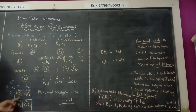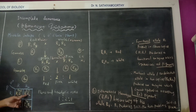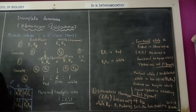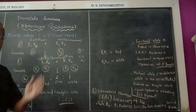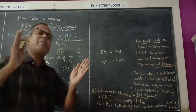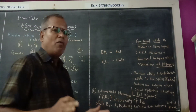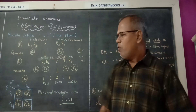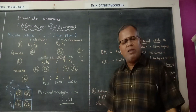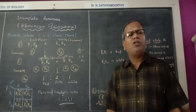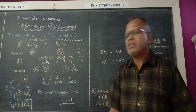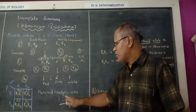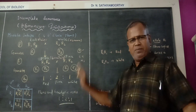The ratio is 1 is to 2 is to 1 — red is to pink is to white. This is the speciality: the phenotypic ratio and genotypic ratio are the same. The phenotypic and genotypic ratio of this process is 1 is to 2 is to 1.